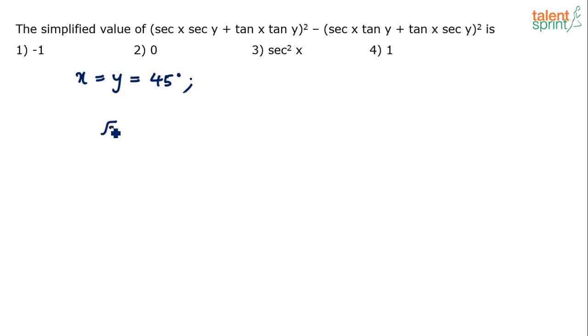So sec x: sec 45 is √2 into sec y. Sec y is also sec 45 which is also √2, plus tan 45 is 1 into tan 45 is 1, whole squared, minus... or you can maybe put x = y = some other value also, 90 or 0, but maybe that will violate some of the conditions. We are better off taking 45.